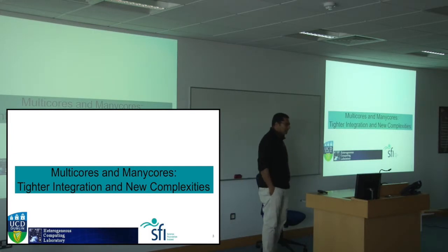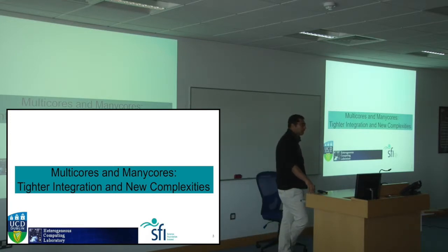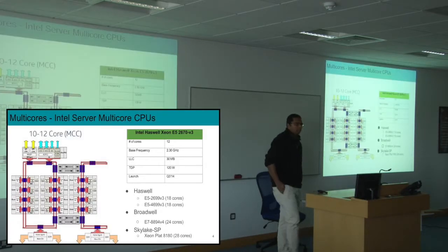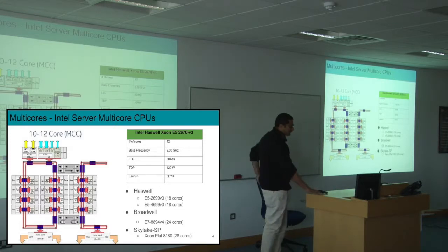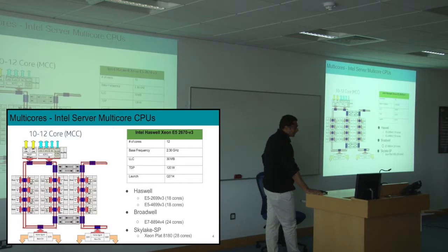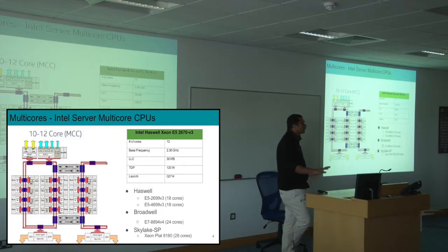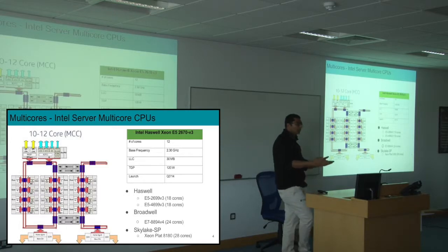The latest multi-core and many-core platforms are quite complex with tighter integration, which has very profound implications for your applications. Looking at the Haswell Xeon CPU — the specification is shown here. The number of cores is 12; it's a Haswell server CPU. The important thing to notice is these 12 cores share a last-level cache, which is probably the biggest bottleneck in this machine. It has a TDP of 120 watts, which I'm highlighting because I'll be talking about energy consumption.